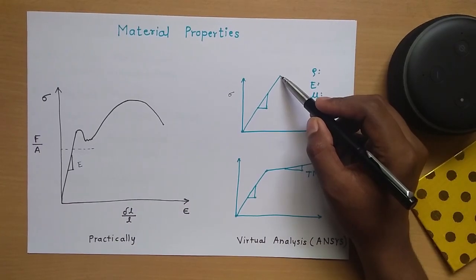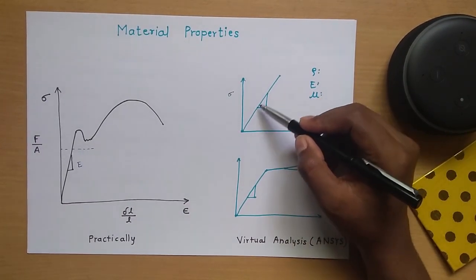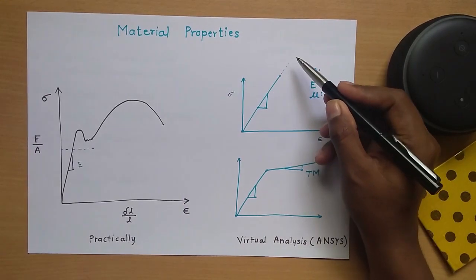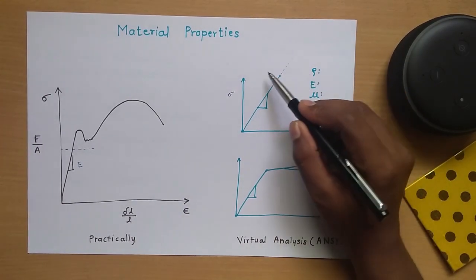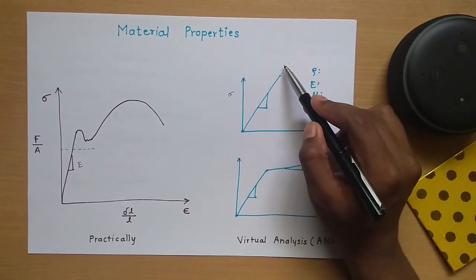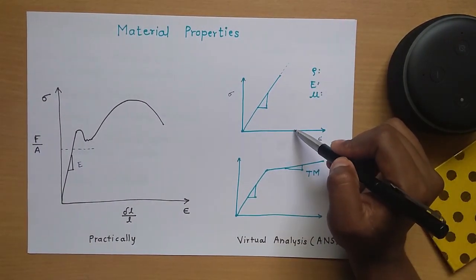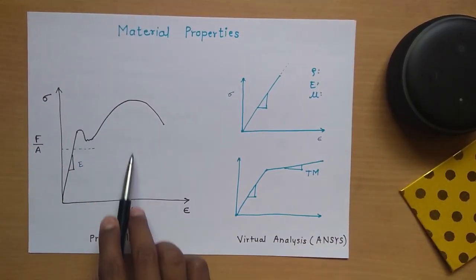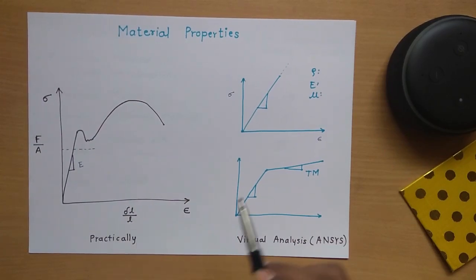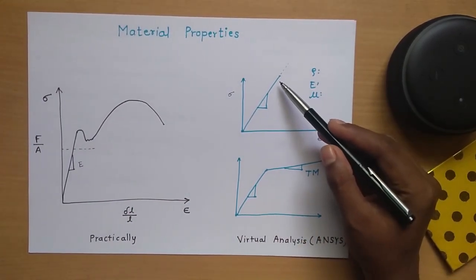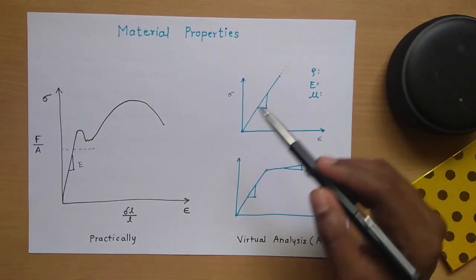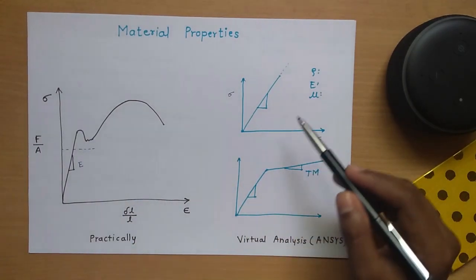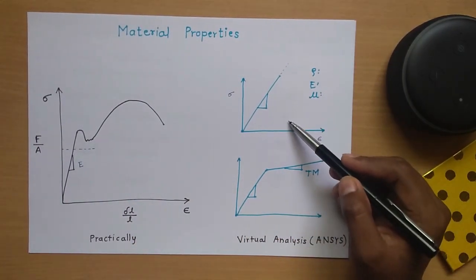Now, after this yield point — suppose this is the yield point — the linear model keeps extending as a straight line. So if we apply maximum stress, it will give some deformation in the model. But in actual practice, if we apply maximum stress, it will give a different deformation. Linear analysis will give good results only up to this yield point; beyond that, it is not possible to get the correct result.